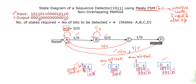The reason Z=1 when X=1 at state D is that the numerator values 1, 0, 1, 1 match our given sequence 1011 — all four bits are detected and detection is completed, so Z=1. This is how to draw the state diagram of a sequence detector using Mealy finite state machine with non-overlapping method. Thank you for watching; please subscribe, share, and like.